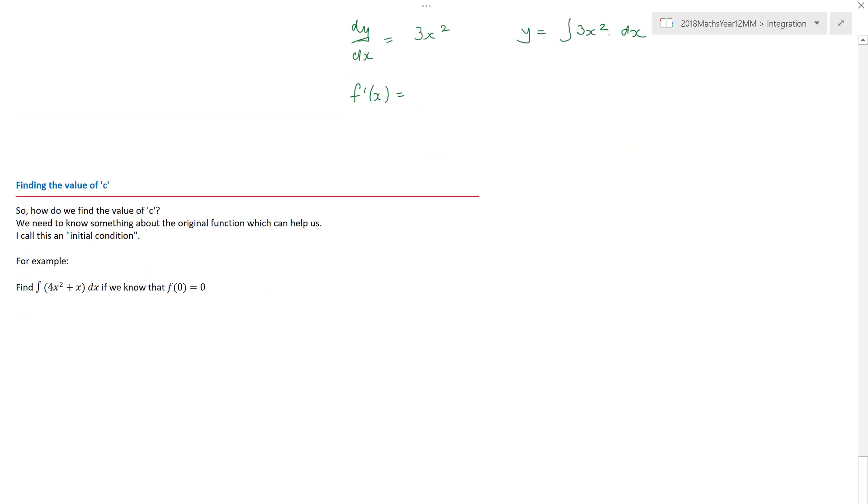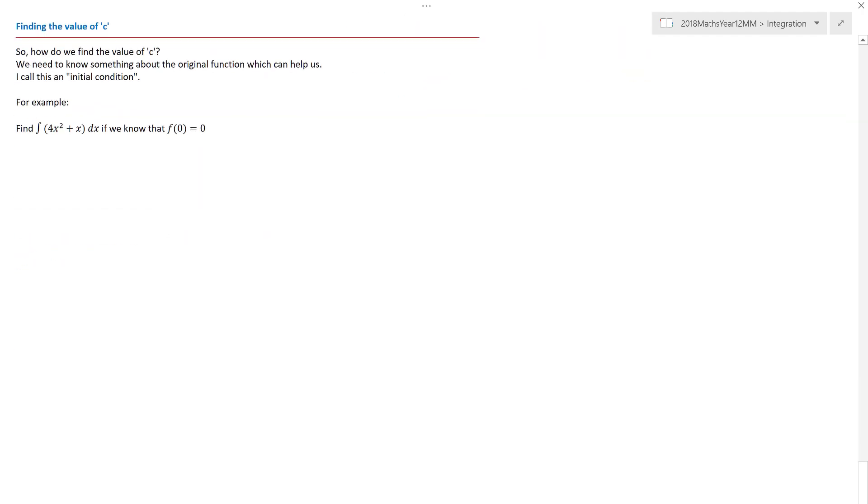So how do we find this value of C? Well, we need to know something about the original function. If you go back, we didn't know anything about the translation of those original three graphs. We just had to write the plus C. So if you remember, when we went back to the start, we ended up having to write it down as x squared plus C. I can find this value of C if, for this particular instance, I know one coordinate.